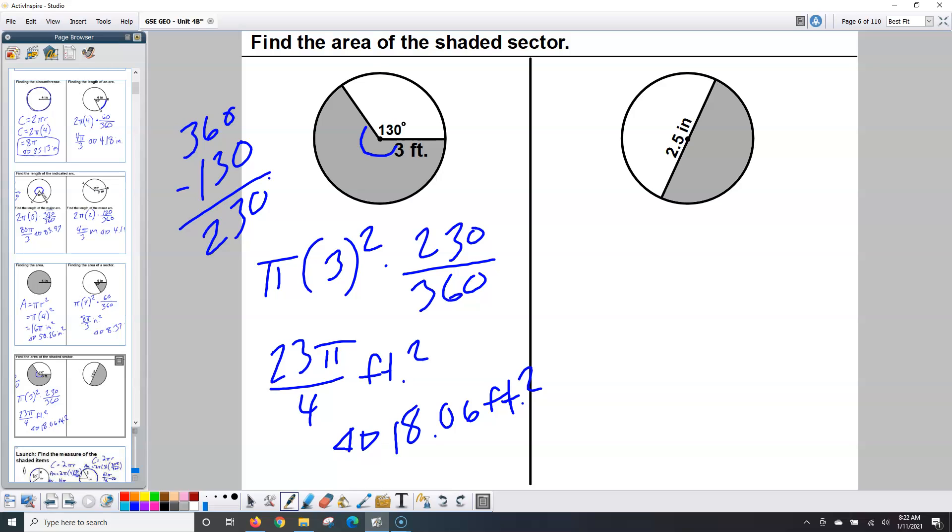If that 2.5 inches was written like over here, that would imply they're just talking about the radius. But it's written in the middle, implying it's the diameter. So when I write πr² times my fraction, so I got πr² times, we said it was going to be 180 out of 360, I'm not going to put 2.5 because that's the diameter. I need the radius, so I'm going to say 2.5 divided by 2. That's 1.25, so I'm going to punch that in as my radius.